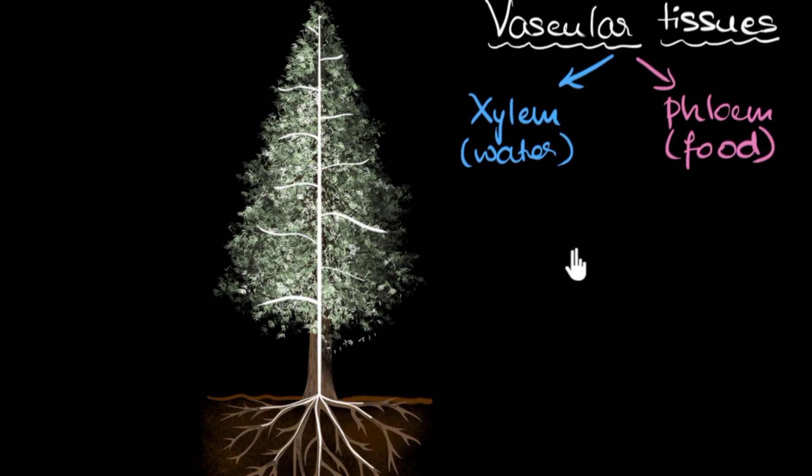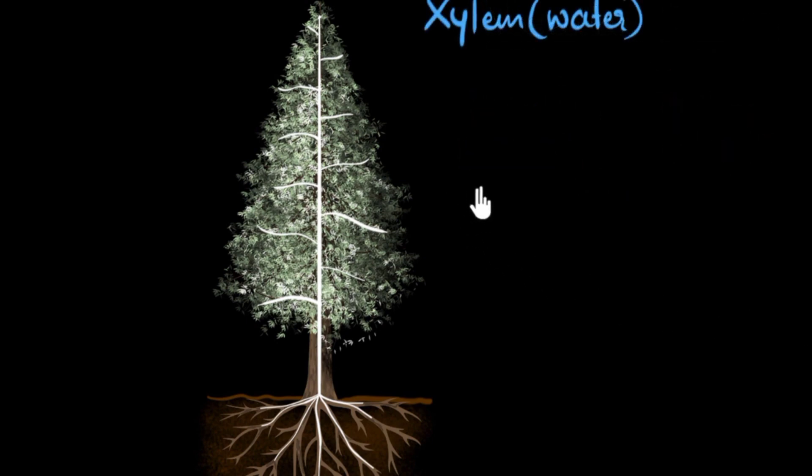So in this video, since we want to talk about water, we're going to be focusing only on xylem and see how it works. Now when I was studying about this, even before thinking about water, my main question was: where do these pipes come from? I mean, how did they get there? It turns out that they come from modified cells.